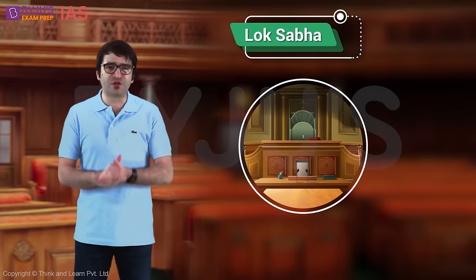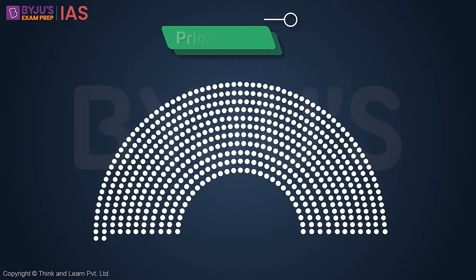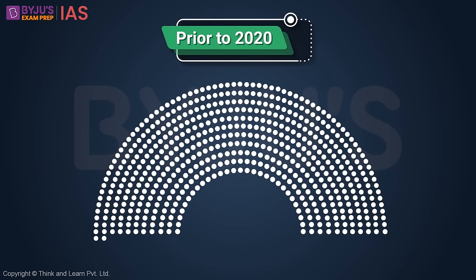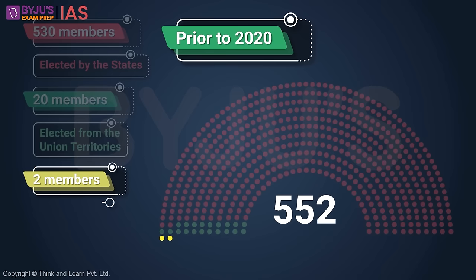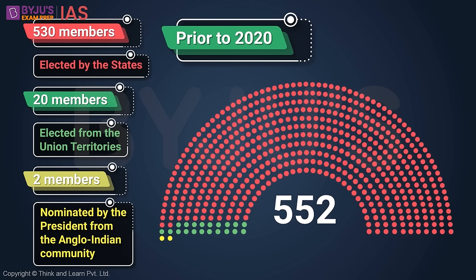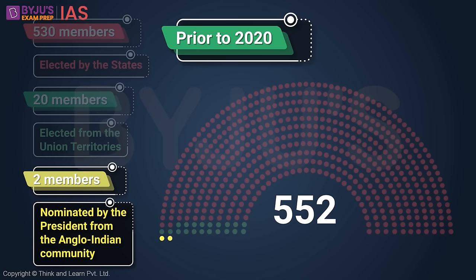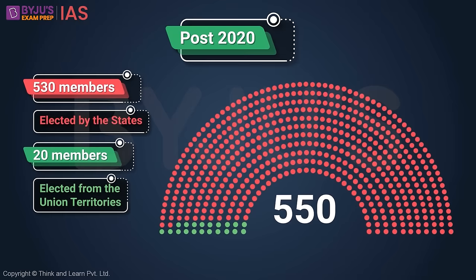Lok Sabha, the popular chamber and lower house of Indian Parliament. Prior to 2020, the maximum strength of Lok Sabha was 552 — 530 elected by states, 20 elected from Union territories, and 2 nominated by the President from the Anglo-Indian community. However, the 104th Constitutional Amendment Act in 2020 abolished the reservation for the Anglo-Indian community in Lok Sabha, leaving us with a maximum strength of 550.